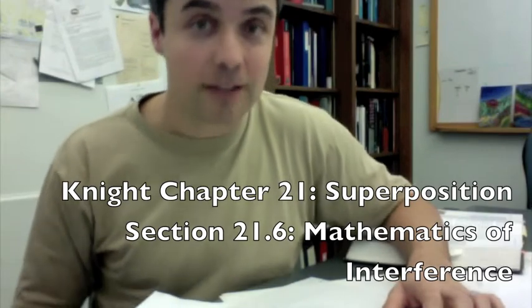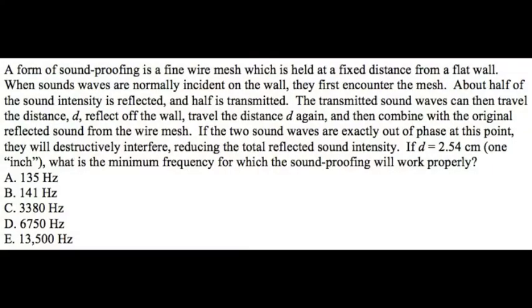So first, let's carefully read the question. A form of soundproofing is a fine wire mesh which is held at a fixed distance from a flat wall. When sound waves are normally incident on the wall, they first encounter the mesh. About half of the sound intensity is reflected and half is transmitted.